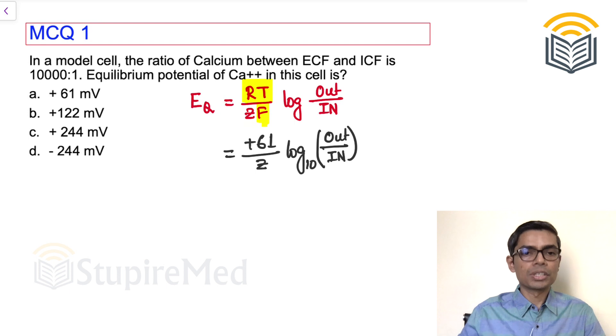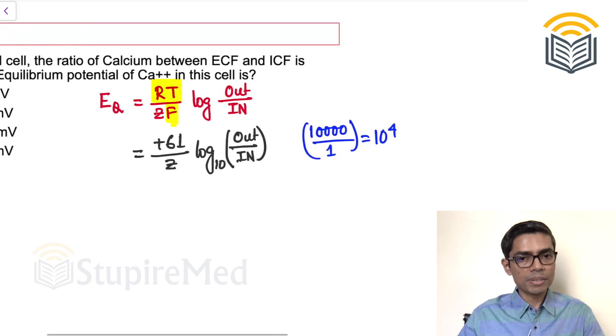Now in this question, the ECF calcium between outside and inside is 10000 is to 1. That means I can say this is 10 to the power 4, right? So this is 10 to the power 4.